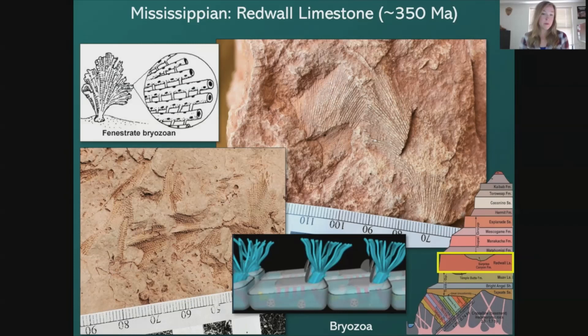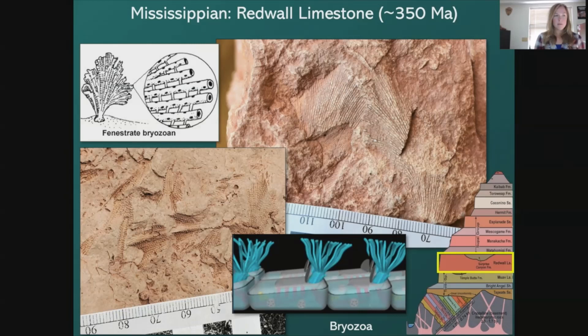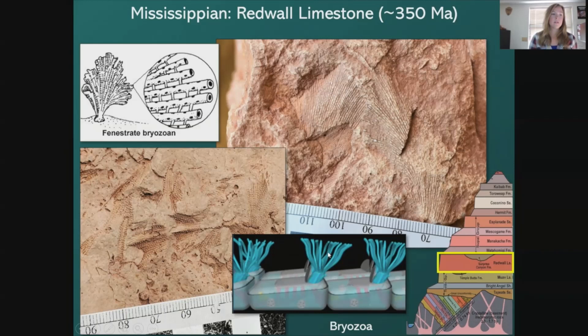Another fossil we find in the Redwall are fenestrate bryozoans. A bryozoan fossil is somewhat like an old abandoned apartment complex in which millions of individual organisms once lived together. Each apartment is called a zooecium, and it housed a tiny organism called a zooid — no bigger than one millimeter. Each zooid would pop out of its zooecium to filter feed on plankton or other microscopic organisms using its tentacles. The fenestrate bryozoan fossil shows each of these zooecia represented as small bumps in the rock.